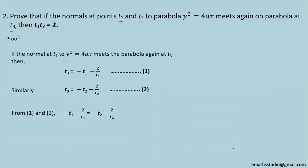Now for simplification purpose what I can do is I can take this term to left hand side while -t₁ goes to right hand side. So left hand side becomes 2/t₂ - 2/t₁ = t₁ - t₂. On left hand side I have taken two common so it becomes 2(1/t₂ - 1/t₁) = t₁ - t₂.